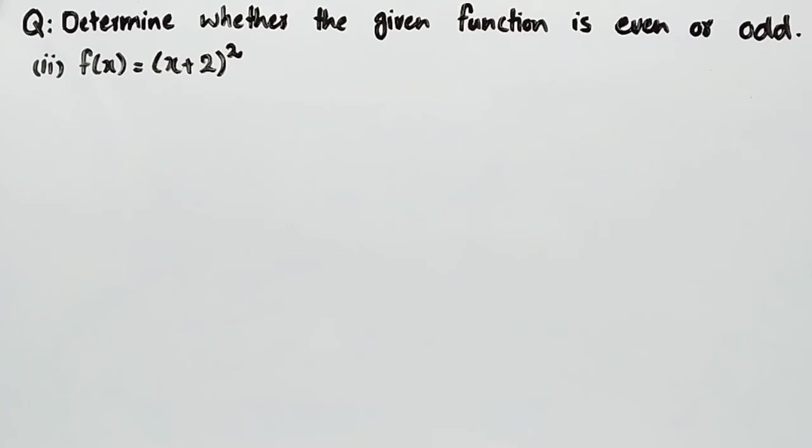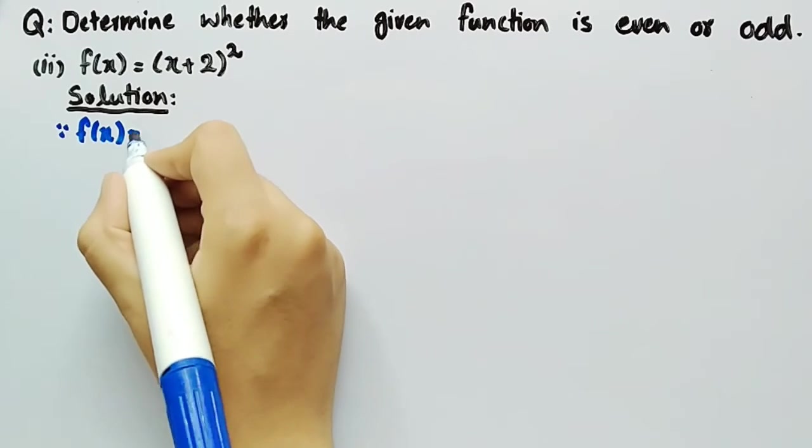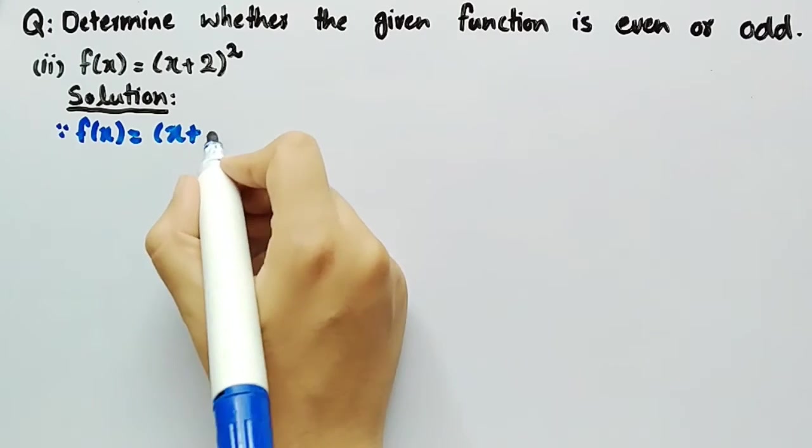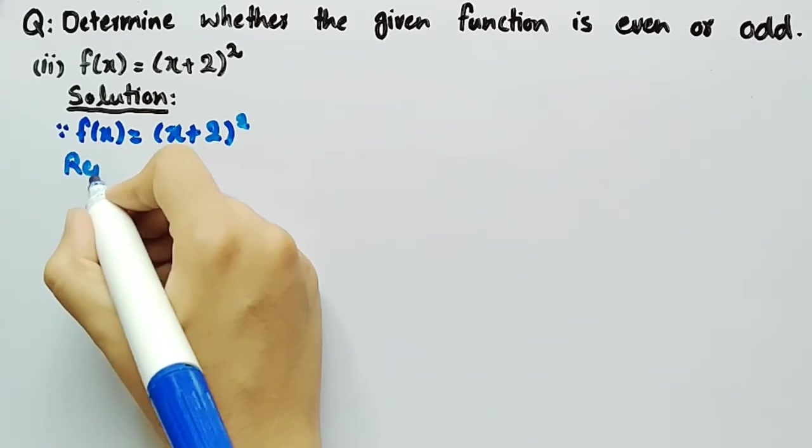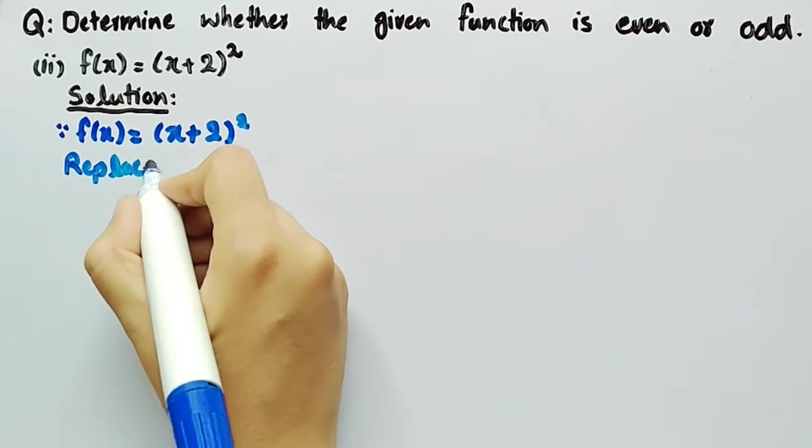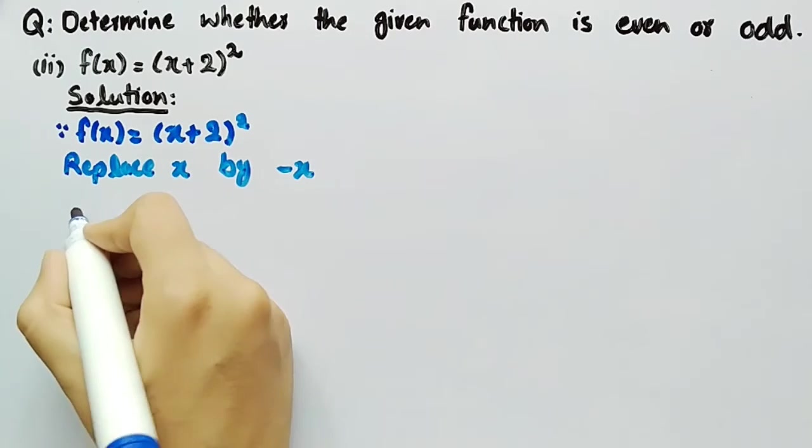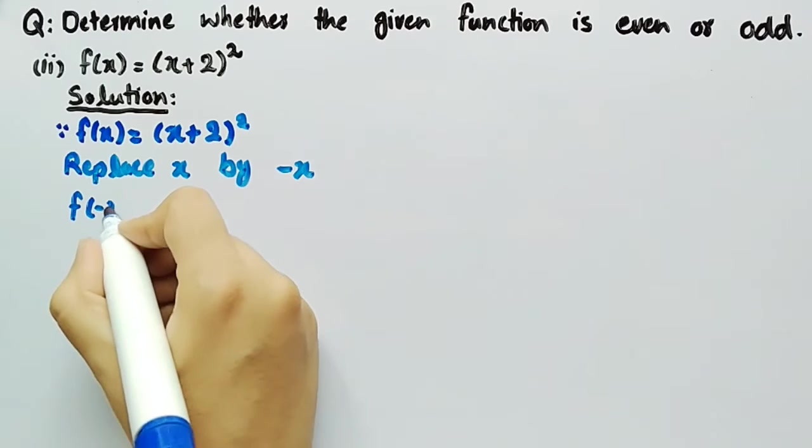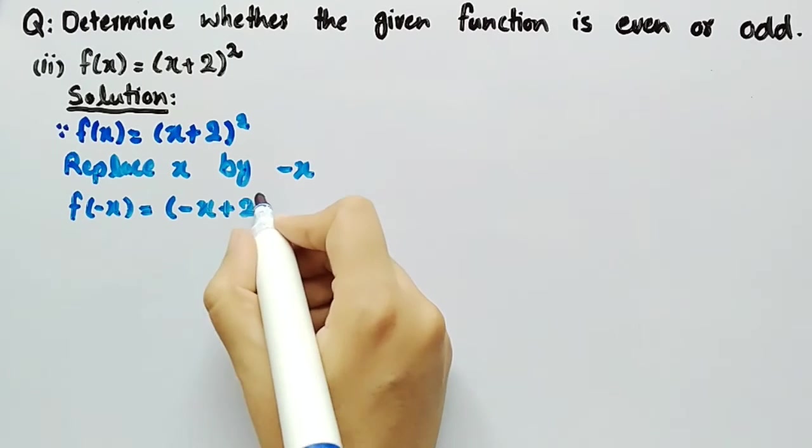The second question is f(x) = (x + 2)². Now coming towards its solution, since it is given that f(x) = (x + 2)², we will replace x by -x and we get f(-x) = (-x + 2)².